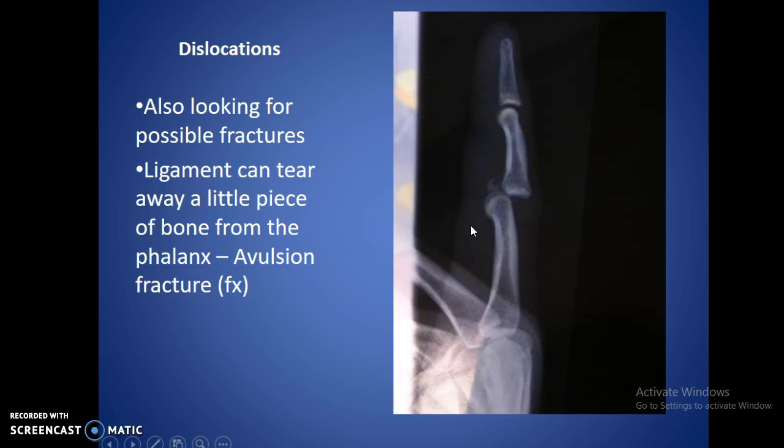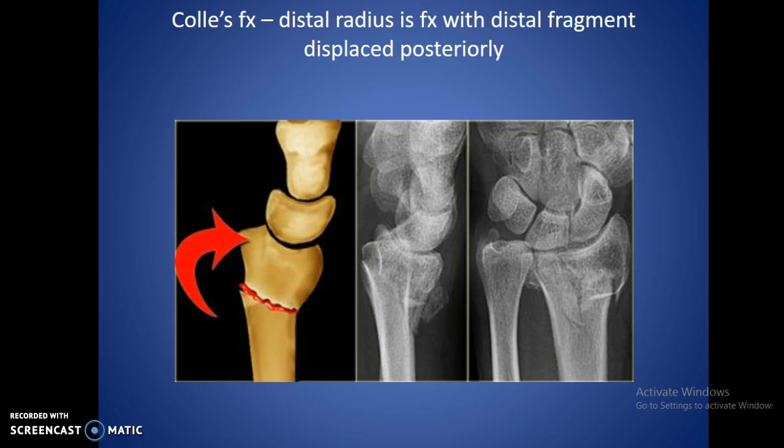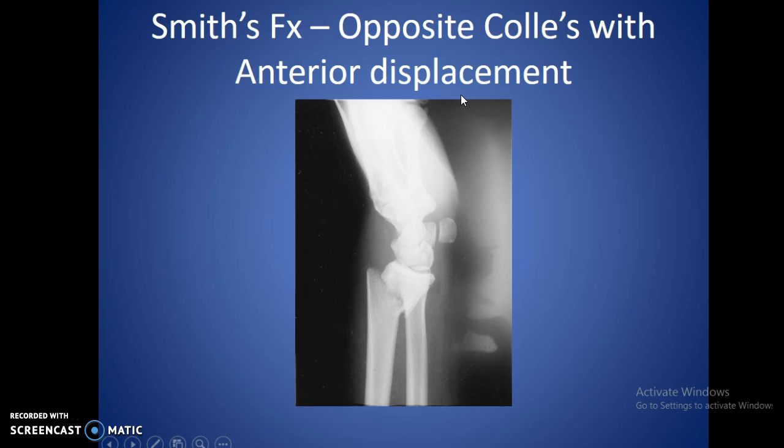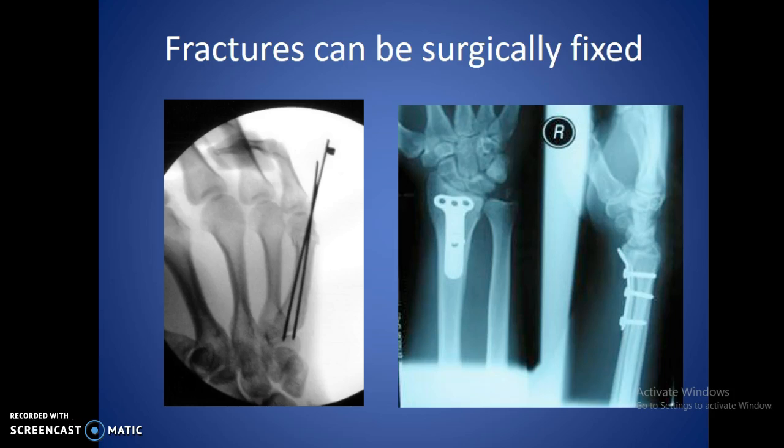A Colles' fracture is a distal fracture of the radius where the distal fragment goes posteriorly. Smith's fracture is just the opposite — it's going to have an anterior displacement. Fractures can typically be fixed with either pins going across to line them up and cast it, or sometimes a variety of plates and screws to anchor them together so the bone has time to heal.